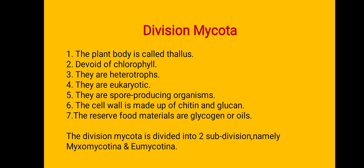In division Mycota, the plant body is called the thallus. Chlorophyll is absent, meaning fungi are heterotrophic. They are eukaryotic — the nucleus and nuclear membrane are both present in the fungal cell. They are spore-producing organisms. The cell wall is made up of chitin and glucan polysaccharides.